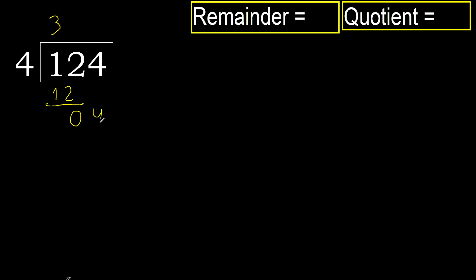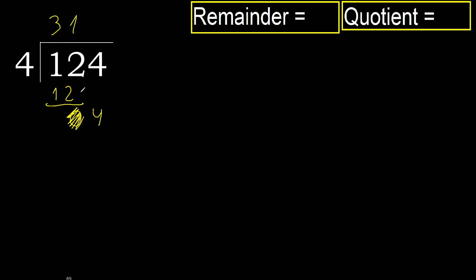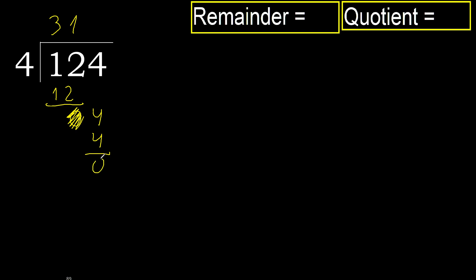Next, eliminate 0 on this side. 4. 4 multiplied by 1 is 4, it's not greater. Ok, subtract 0.